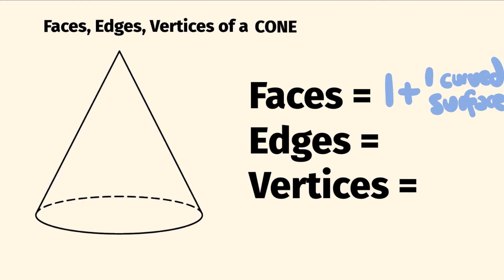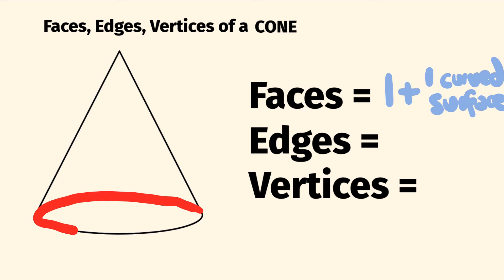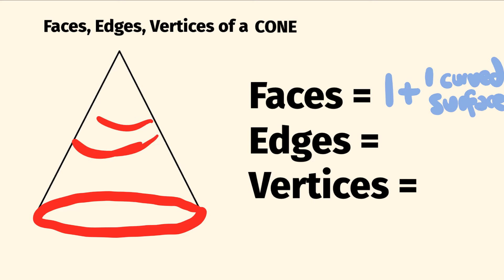So now to the number of edges. These are where the faces and surfaces meet. So we can go through and count these. We have the one that goes along the bottom here, and that's it. If you were to have a look at a cone here, this part here is not an edge at all — it doesn't actually have that boundary there. So we only have one edge.